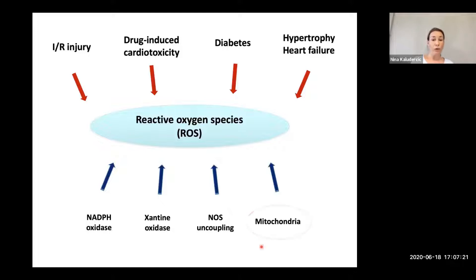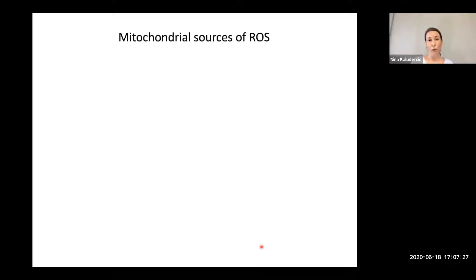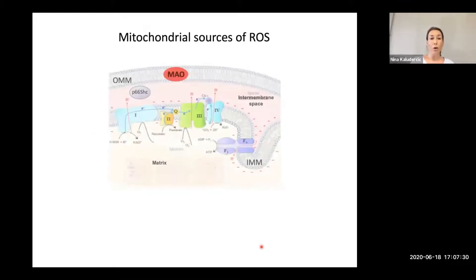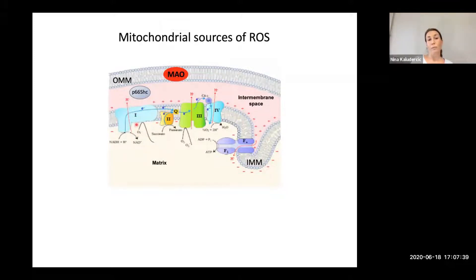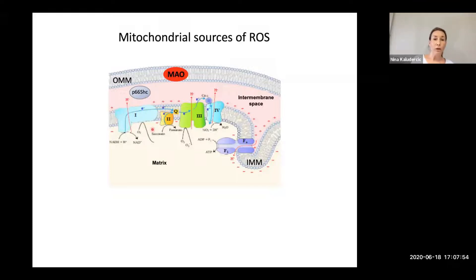Nevertheless, mitochondria are considered to be a major source of ROS within the cell. Within mitochondria, the best described site for ROS formation is the mitochondrial respiratory chain. As electrons are transported across the respiratory chain, they can escape and partially reduce oxygen to superoxide. This happens especially at the level of complexes one and three. We can also have the reversal of electron transport, again resulting in superoxide formation at complex one, as nicely described by Mike Murphy's lab.